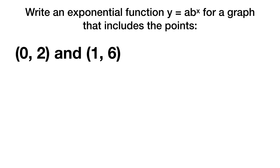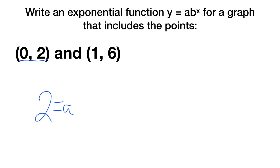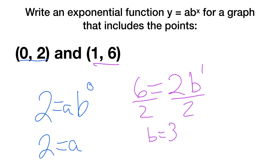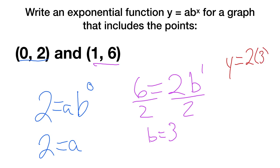Now we're going to write an exponential function y equals ab to the x for a graph that includes two given points. Using the point (0, 2): 2 equals a times b to the zero. Since b to the zero is one, that means 2 equals a. Now plugging a equals 2 into the second equation using point (1, 6): 6 equals 2 times b to the first, so 6 equals 2b, meaning b equals 3. Our final equation is y equals 2 times 3 to the x.